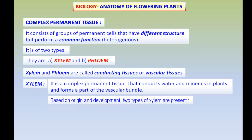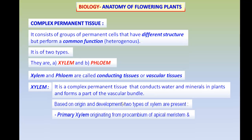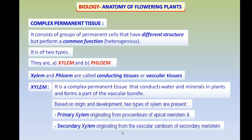Based on origin and development, we see two types of xylem. The Primary xylem originates from the Procambium of the Apical Meristem, and the Secondary xylem originates from the Vascular Cambium of the Secondary Meristem.